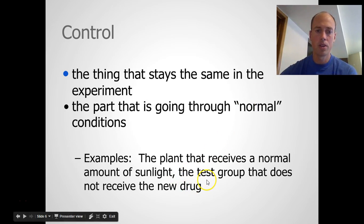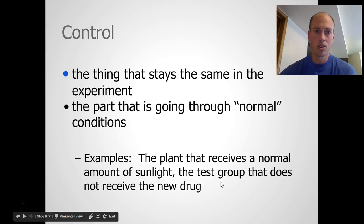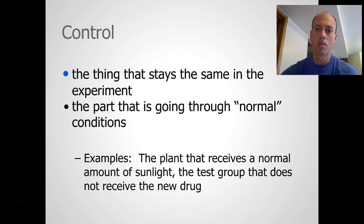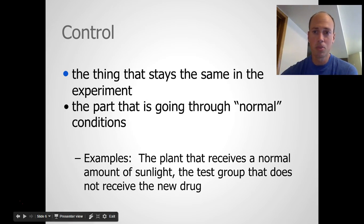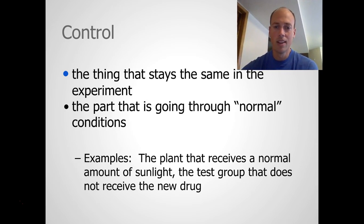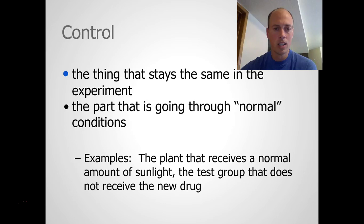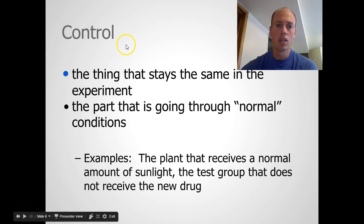In the example of the pill that could cure the common cold, the control would be the test group that does not receive the new drug. It also might be the group that gets the placebo pill. A placebo is something like a sugar pill given just like the other group, so that you can compare it to something else. It's not theoretically supposed to work, but placebos do quite amazing things — even just thinking you're getting a pill that will make you better can actually improve your condition in many cases. The control is the thing that stays the same.